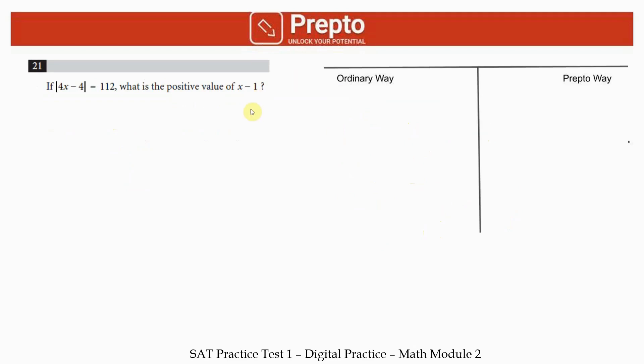Question 21: What is the positive value of x minus 1? In the ordinary way, you start by saying modulus of 4x minus 4 equals 112. Modulus means the positive value is 112, so originally either 4x minus 4 was 112, or 4x minus 4 was minus 112. From here, 4x equals 116, x equals 29, and x minus 1 equals 28. For the other case, 4x equals minus 108, x equals minus 27, and x minus 1 equals minus 28. Since we want the positive value, we put 28 as our answer.